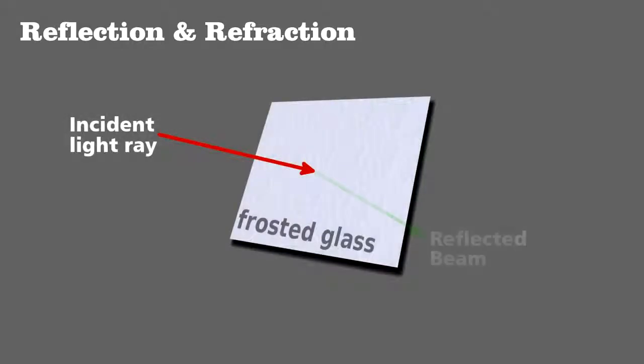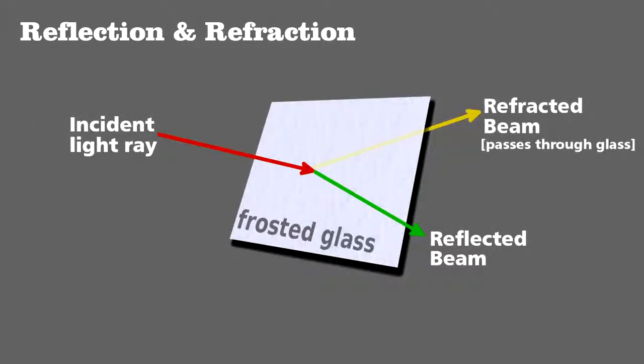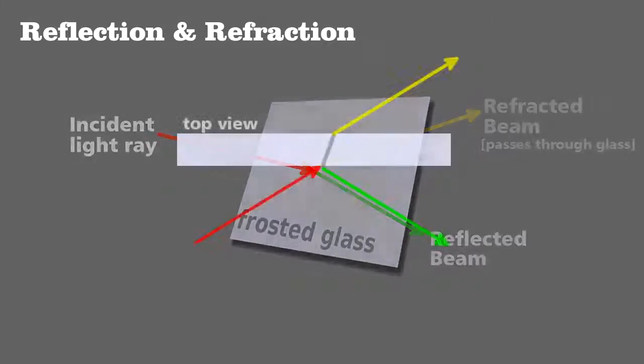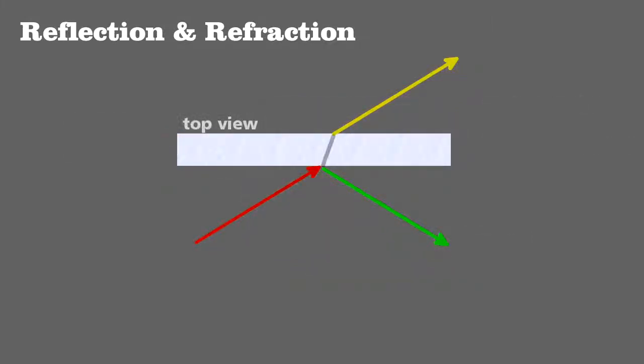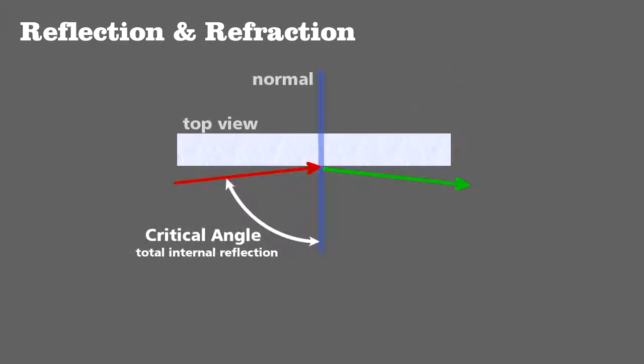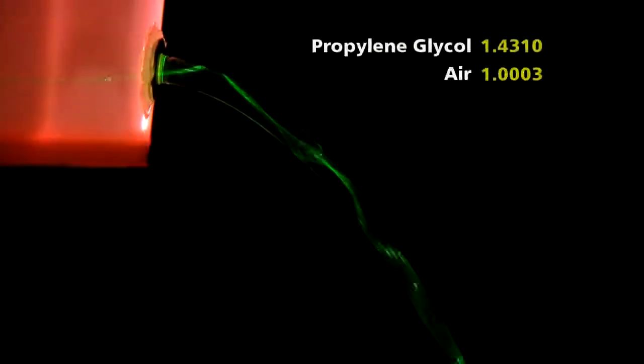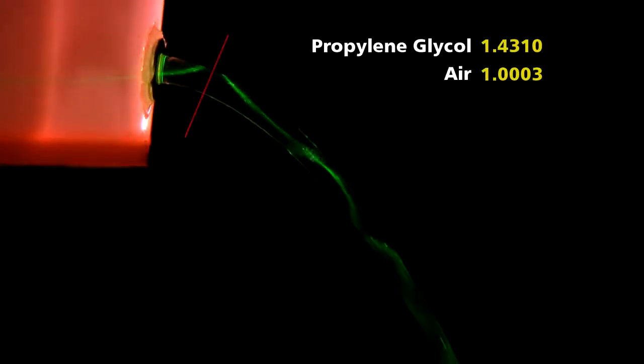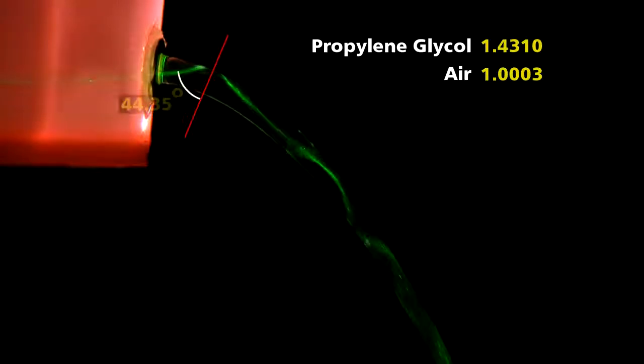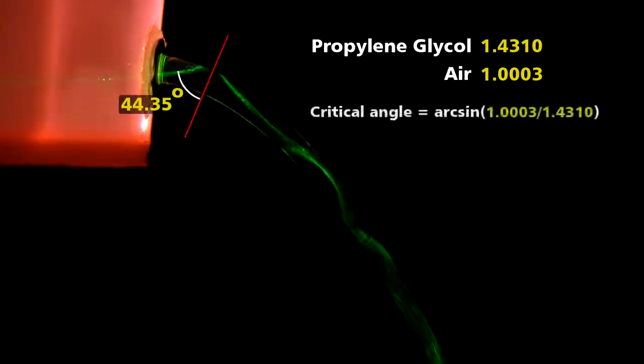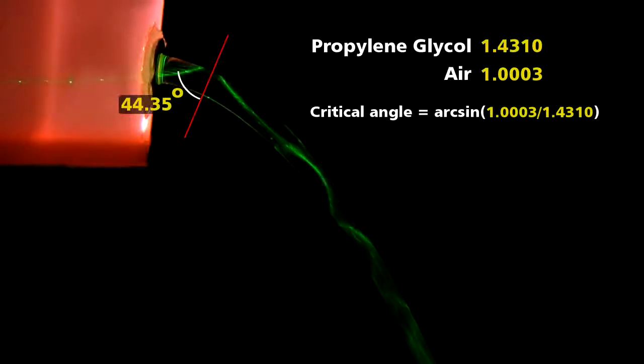Recall that any time light strikes a surface, it can either be absorbed by the material, reflected from it, or pass into and through it. The latter we call refraction. It's easier to see from a top view. Reflection and refraction can happen at the same time, but if a light ray hits the surface at an angle greater than the critical angle, it will be completely reflected and not refracted. For this propylene glycol and air system, as long as a beam hits the surface at an angle greater than 44.35 degrees, measured from the normal, it will propagate down the stream via total internal reflection.